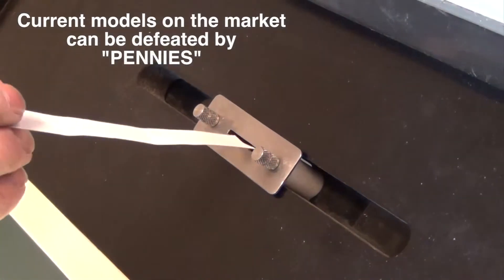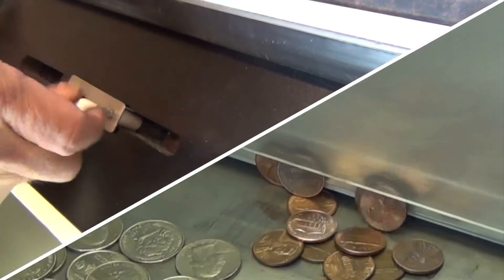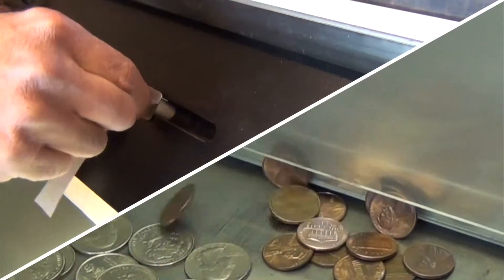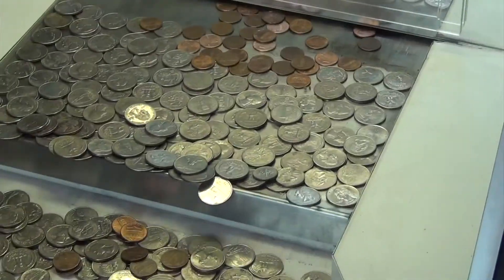In current models, the coin entry slide is easily defeated. Inserting a paper slip allows the pennies to slide onto the play field. This in turn allows the player to clear the quarters and prizes for literally pennies.